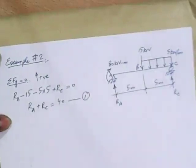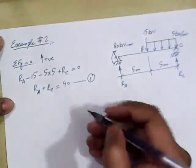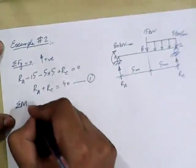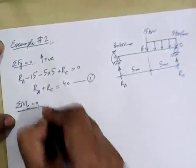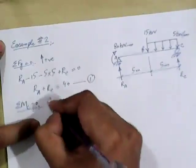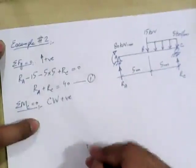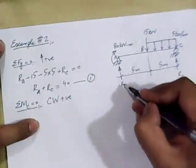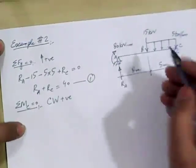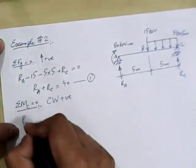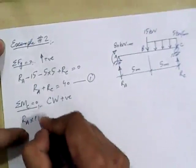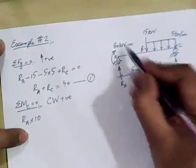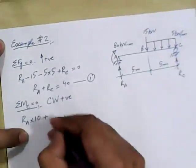For the second equation, let's apply ΣMC = 0, with anticlockwise moments taken as positive. RA will introduce a moment about C. Starting from the left side: RA acting upward will produce a moment. Then this point moment at A, acting about point A, is taken as positive.